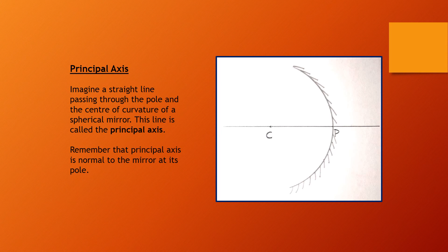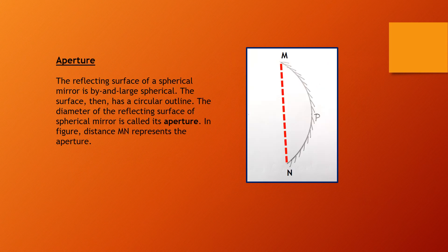Aperture: the reflecting surface of a spherical mirror is by and large spherical, so the surface has a circular outline. The diameter of the reflecting surface of a spherical mirror is called its aperture. In the figure, the distance MN represents the aperture.